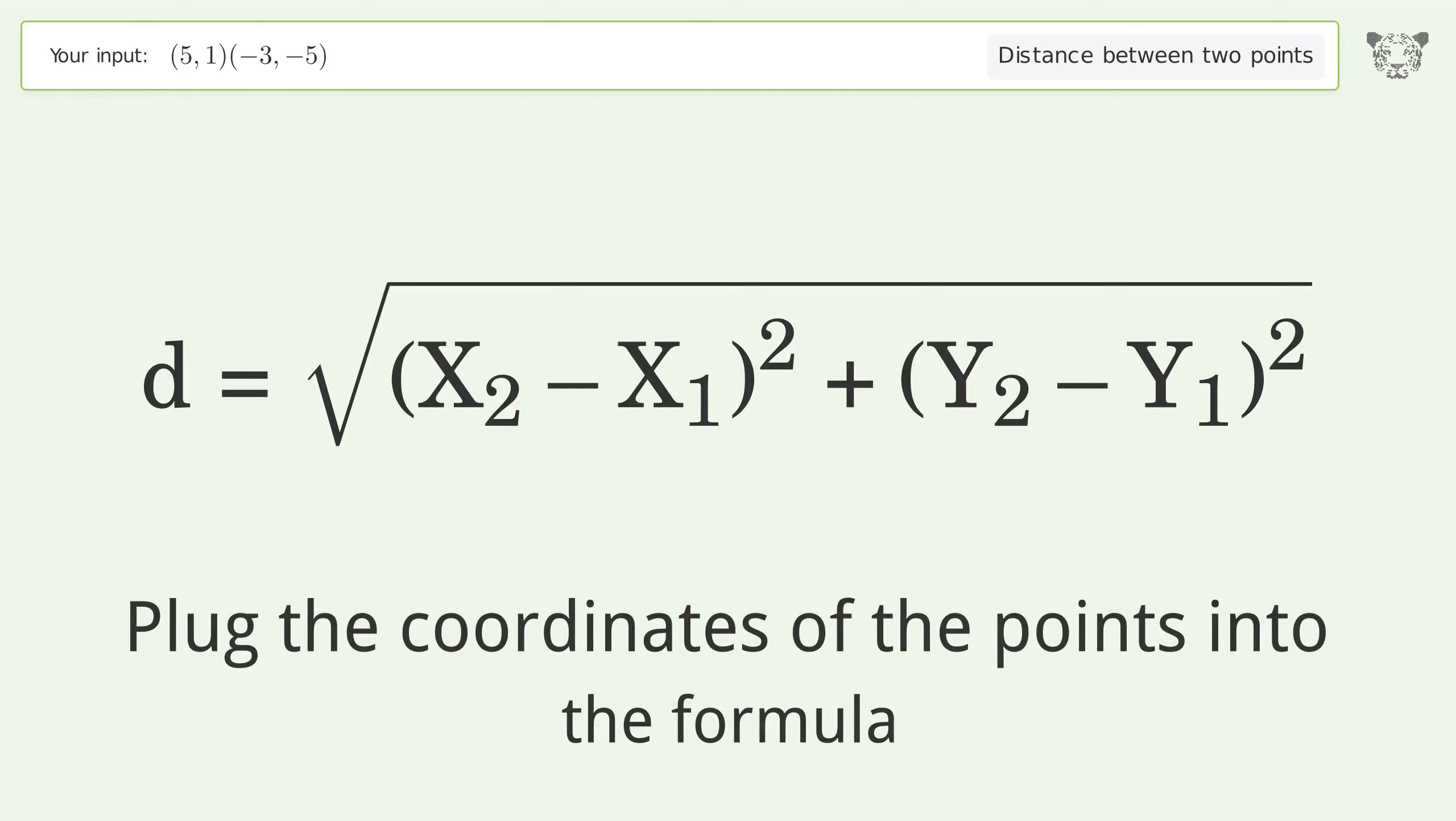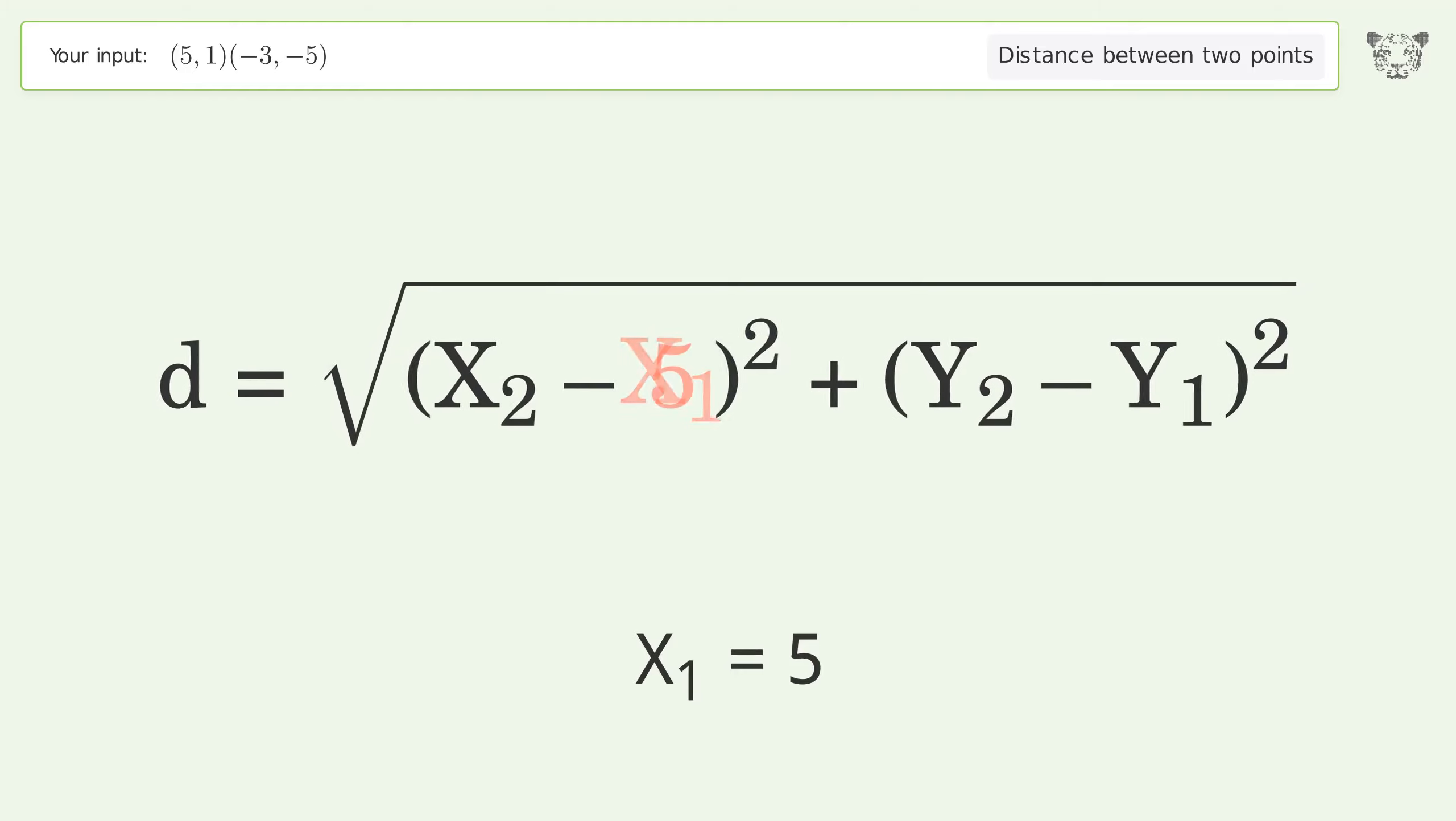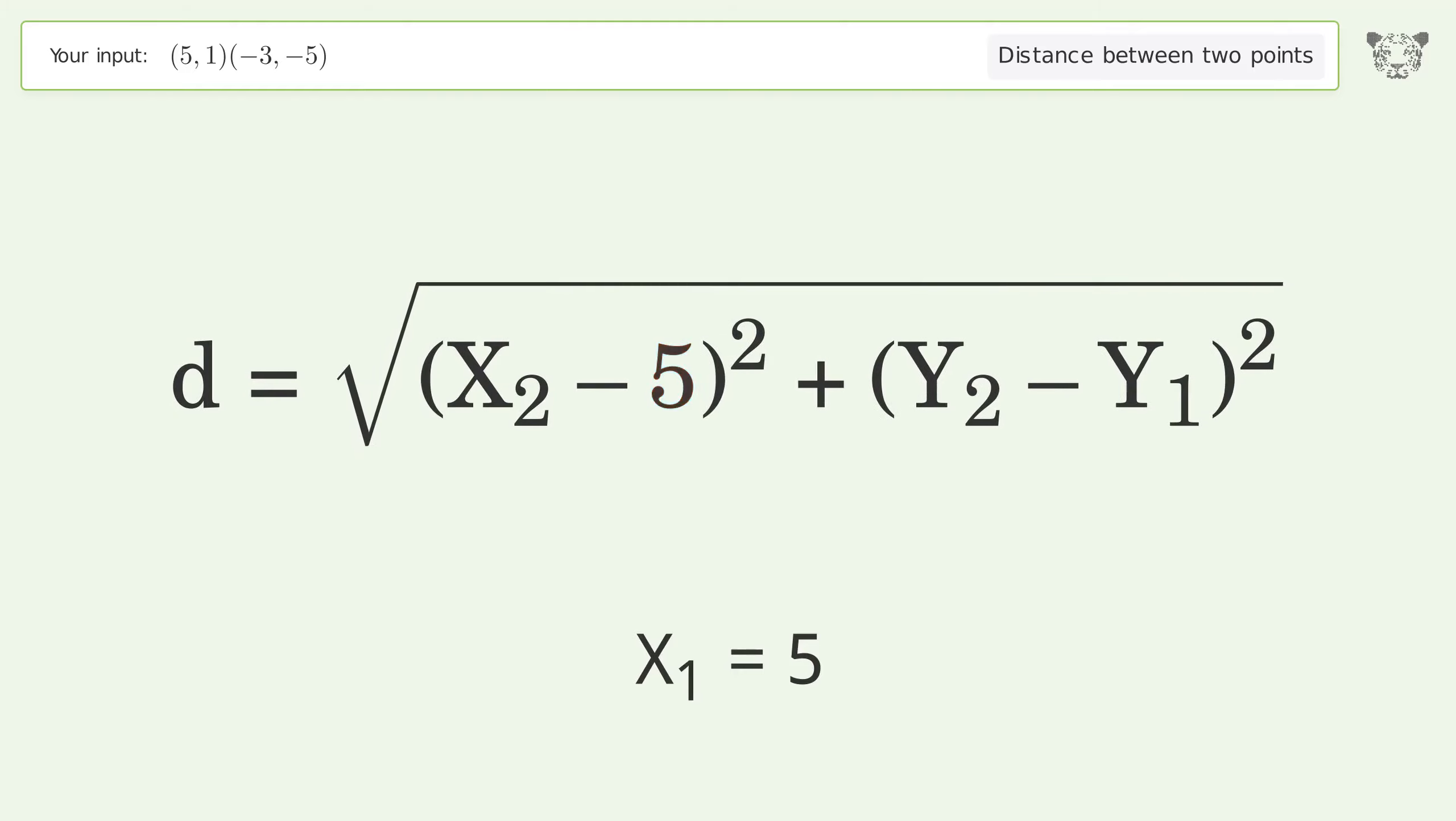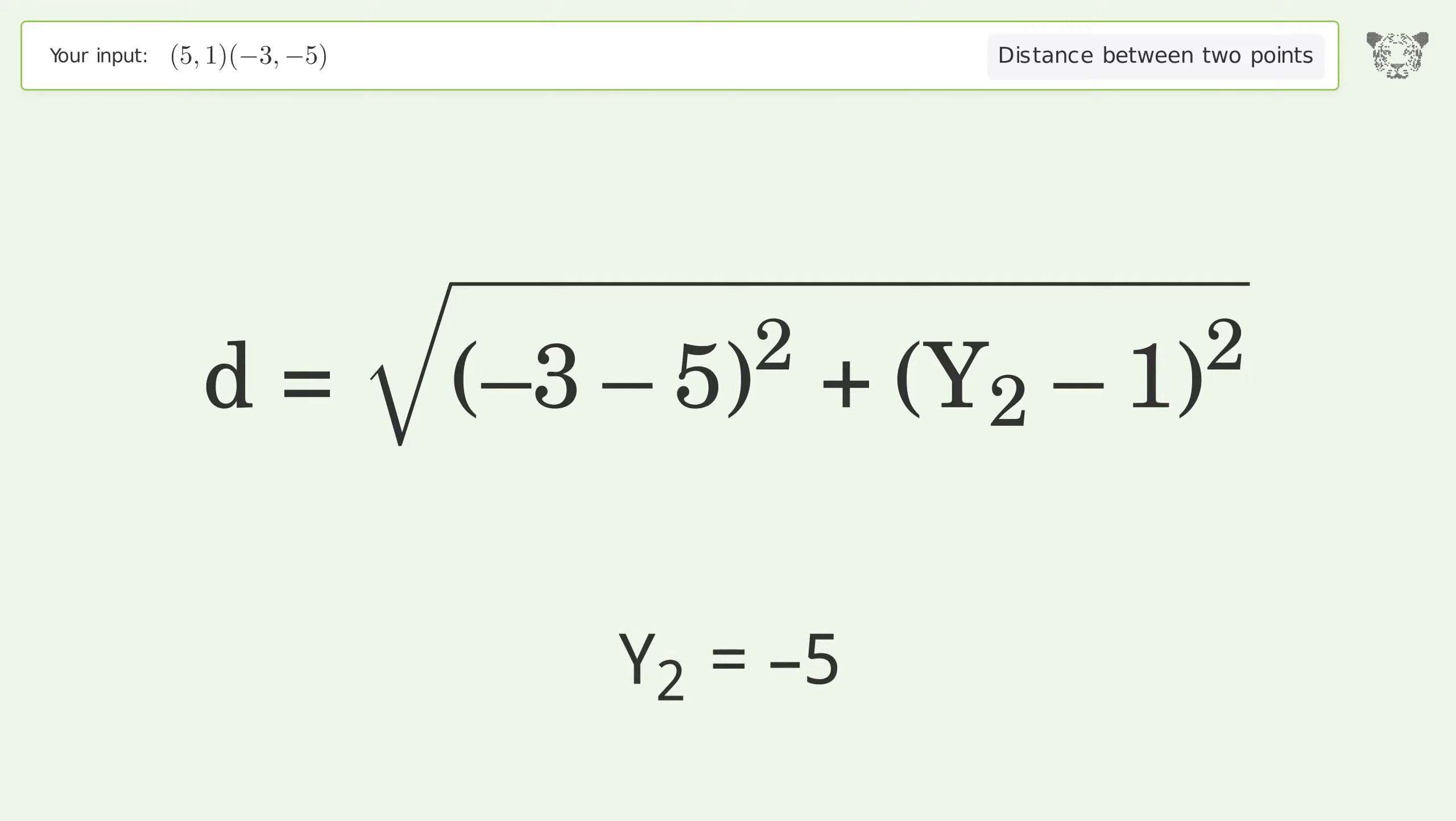Plug the coordinates of the points into the formula: x₁ equals 5, x₂ equals negative 3, y₁ equals 1, and y₂ equals negative 5.